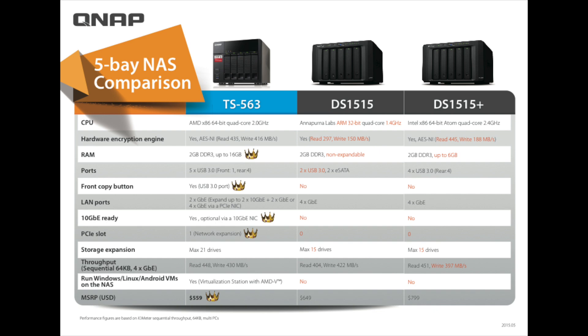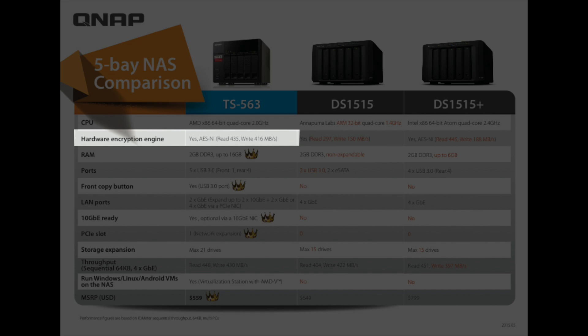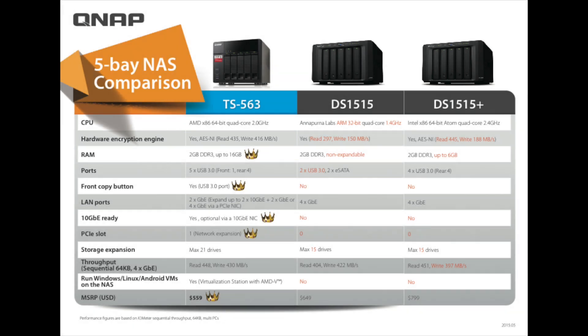Next, let's take a look at hardware encryption. All three units do have hardware encryption. The QNAP TS-563 has AES-NI hardware encryption and reads at 435 and writes at 416 megabytes per second. The DS-1515 has hardware encryption as well, reading at 297 and writing at 150 megabytes per second. The DS-1515+ also has hardware encryption, reading at 445 and writing at 188 megabytes per second.